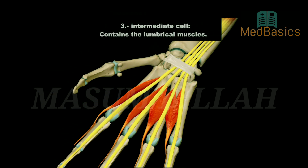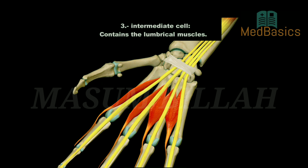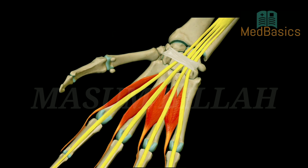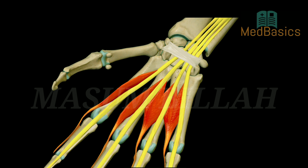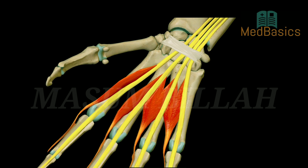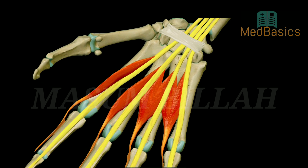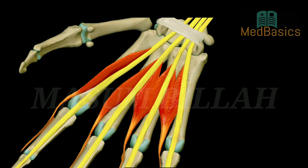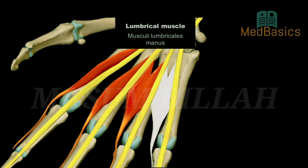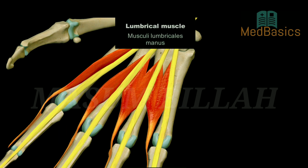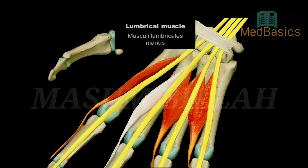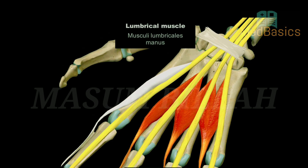Intermediate fascial compartment. This compartment contains the lumbrical muscles. The lumbricals are deep muscles of the hand that flex the metacarpophalangeal joints and extend the interphalangeal joints.